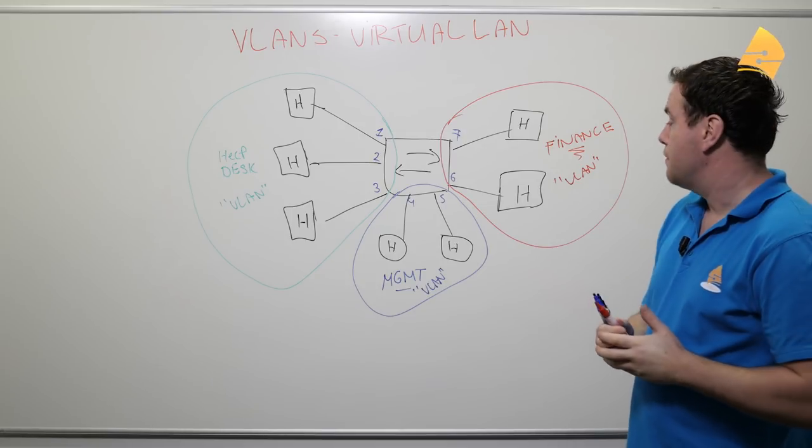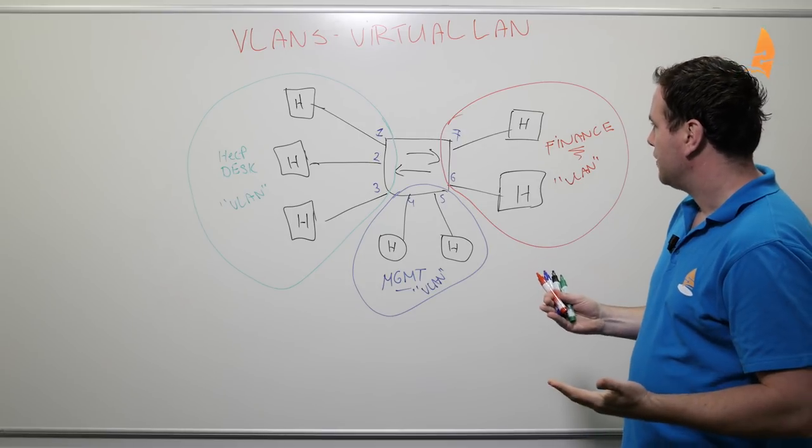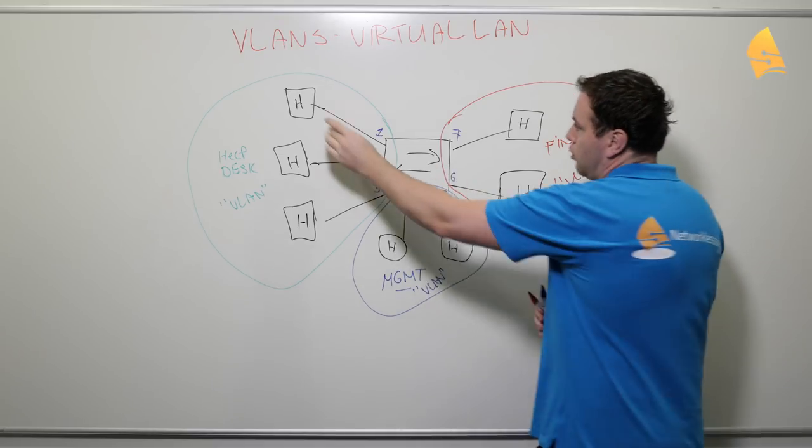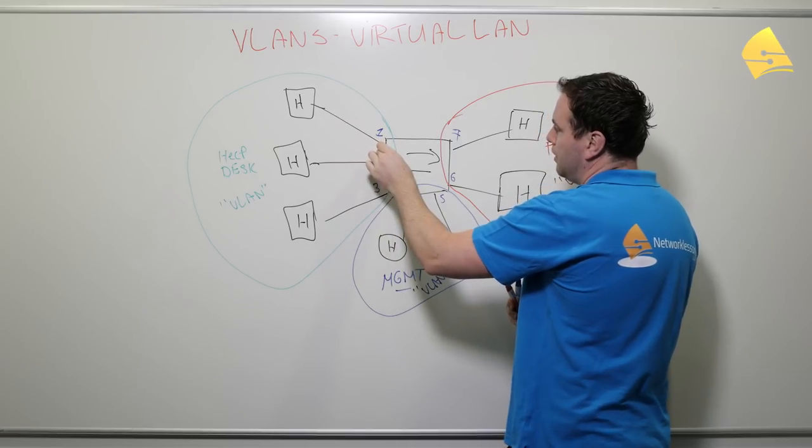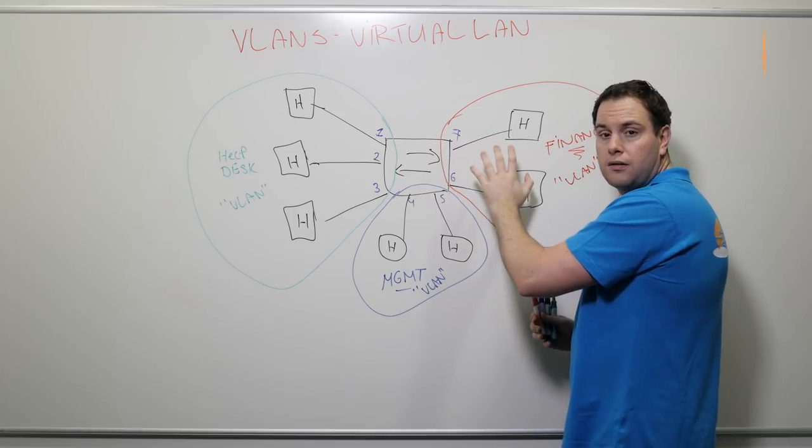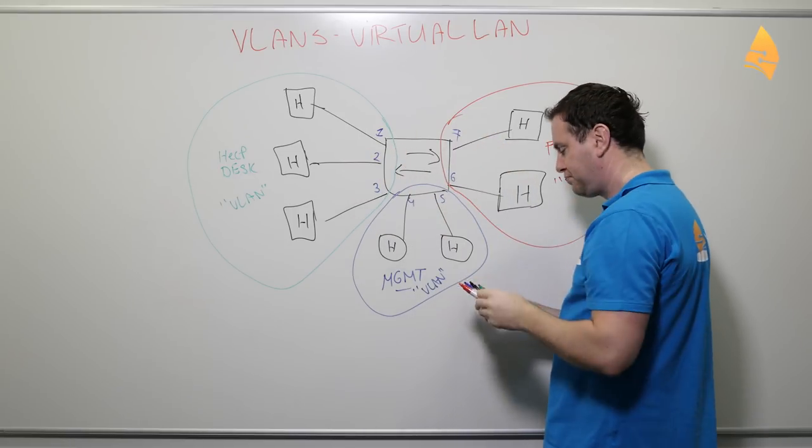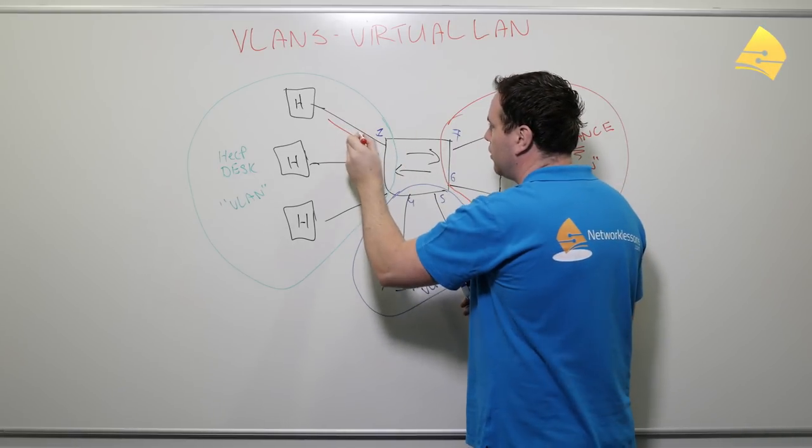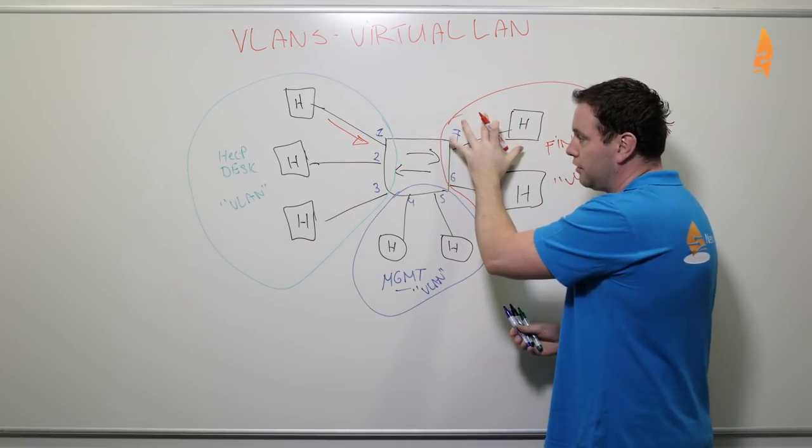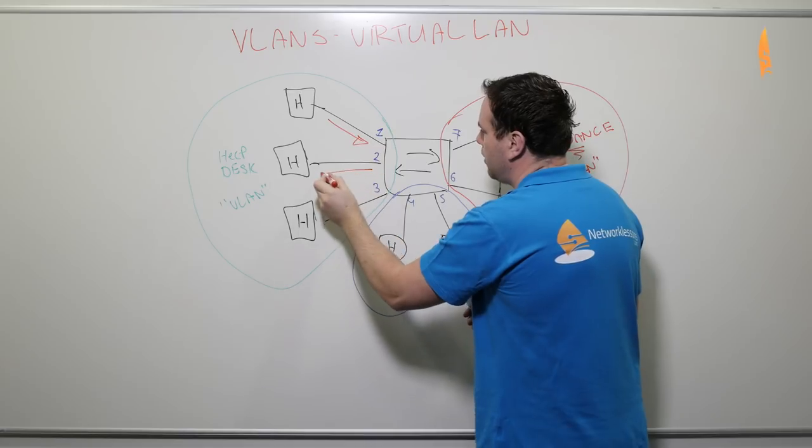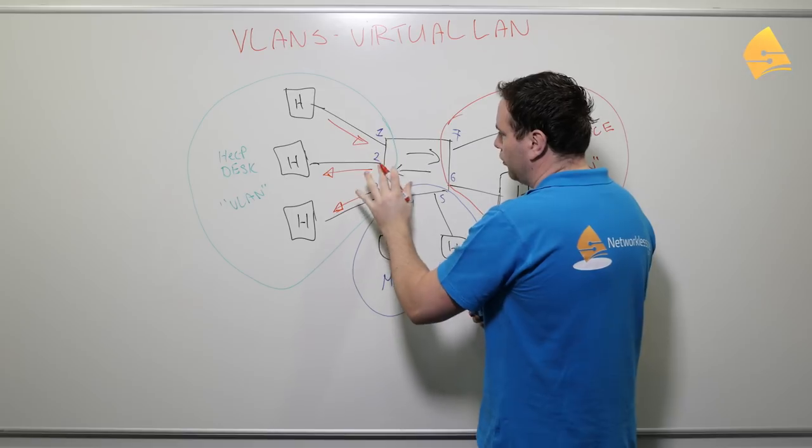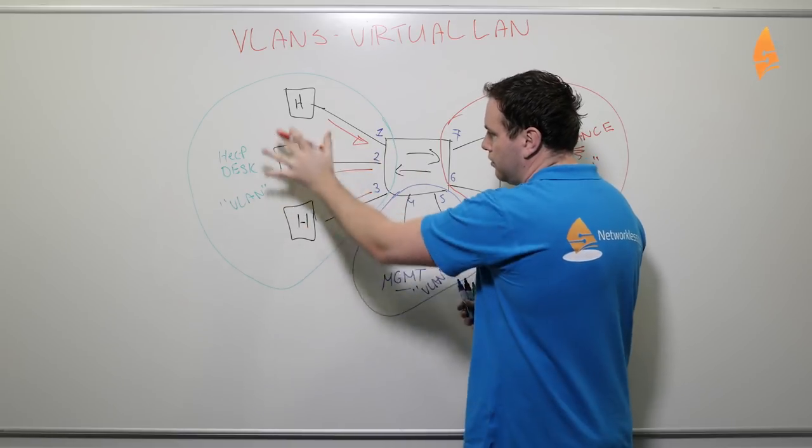Also something to keep in mind. Normally broadcast traffic, so let's say this host over here is sending a broadcast frame, normally the switch would forward it out of all of the interfaces. But when we use a VLAN, let's say this is a broadcast frame, then the switch won't flood it out of all the other interfaces. But it will only stay within the VLAN. So the broadcast traffic stays within the VLAN.